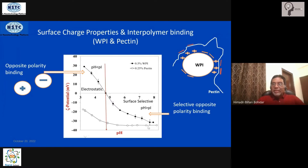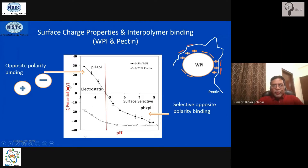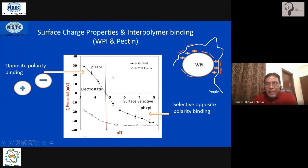Systematic characterization of precursors is a must before making nanomaterials. Here, the zeta potential of the two biopolymers is plotted as a function of pH. The dark circles represent the protein, which clearly shows the isoelectric point close to 4.8. Below 4.8, the protein is positively charged. Pectin, on the other hand, is negatively charged throughout the entire pH range — its polarity does not change, unlike polyampholytes.